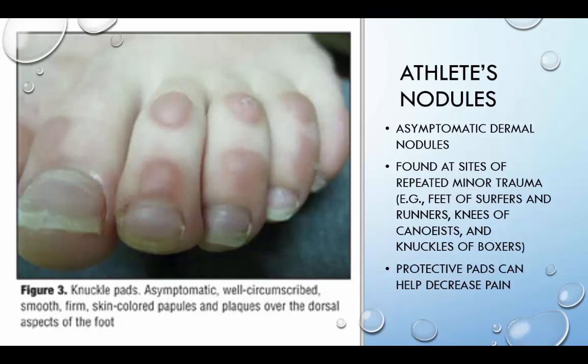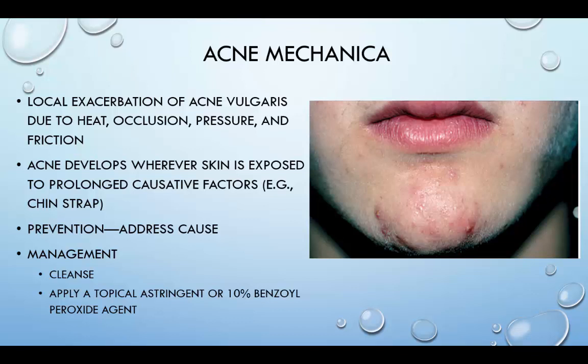Athlete's nodules are asymptomatic dermal nodules typically found at sites of repeated minor trauma, such as the feet of surfers and runners, the knees of canoeists, and the knuckles of boxers. Protective pads can help decrease the pain. Acne mechanica presents with papules and pustules in areas of mechanical trauma, also known as football acne. Its causative factors include chin straps, forehead bands, shirt collars, football shoulder pads, backpack straps, automobile seat belts, bras, wide belts, and orthopedic casts and braces. If left untreated, the acne may develop into a cyst. Treatment and prevention includes thoroughly cleansing the area after a workout with a mild abrasive cleaner and applying a topical astringent. In severe cases, a systemic antibiotic may be prescribed. This condition usually improves or resolves after the season is over.